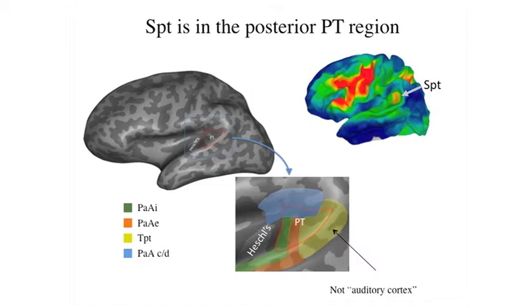SPT is located at the back of the Sylvian fissure. Looking at the cytoarchitectonics, researchers often consider the planum temporale — implicated in disorders like dyslexia and schizophrenia — as purely auditory. But only about the first half is auditory. The portion at the back, referred to as TPT, appears transitional and looks much like the cytoarchitectonics of motor areas, providing more evidence that SPT is not just auditory but an auditory-motor interface.